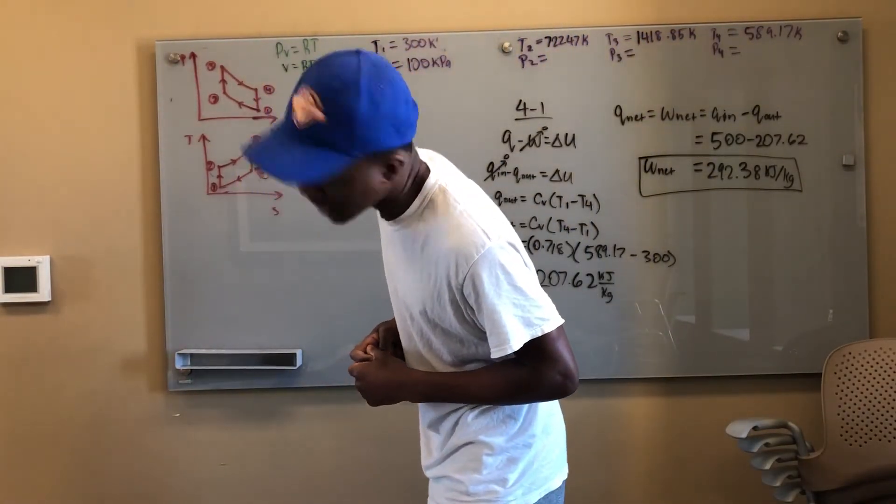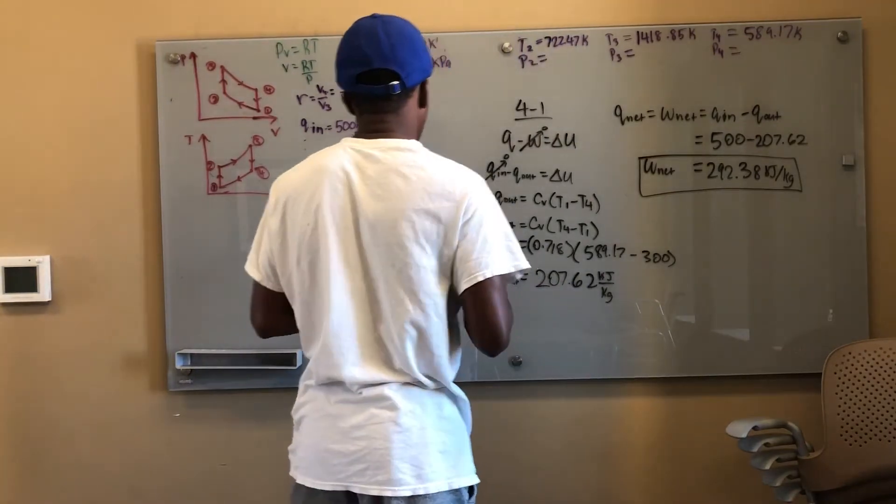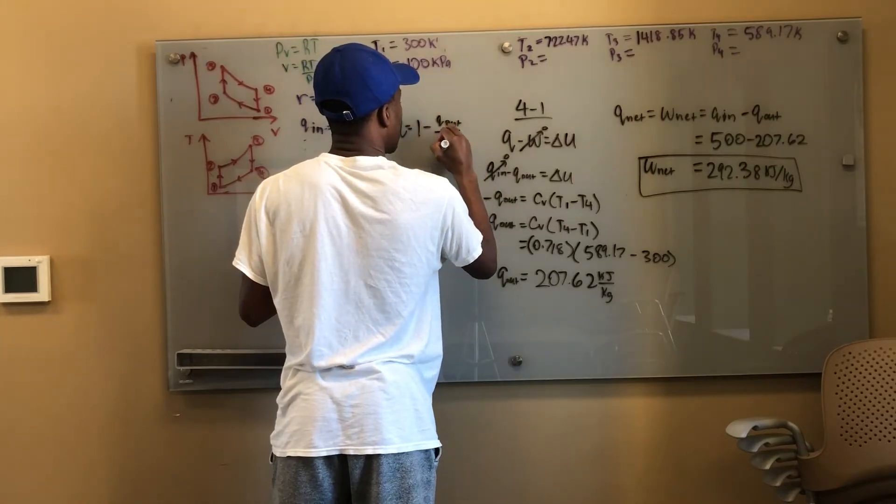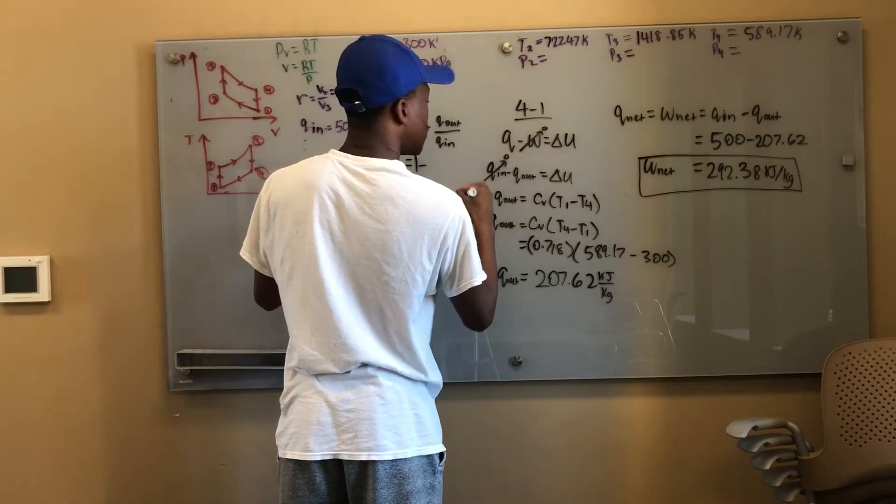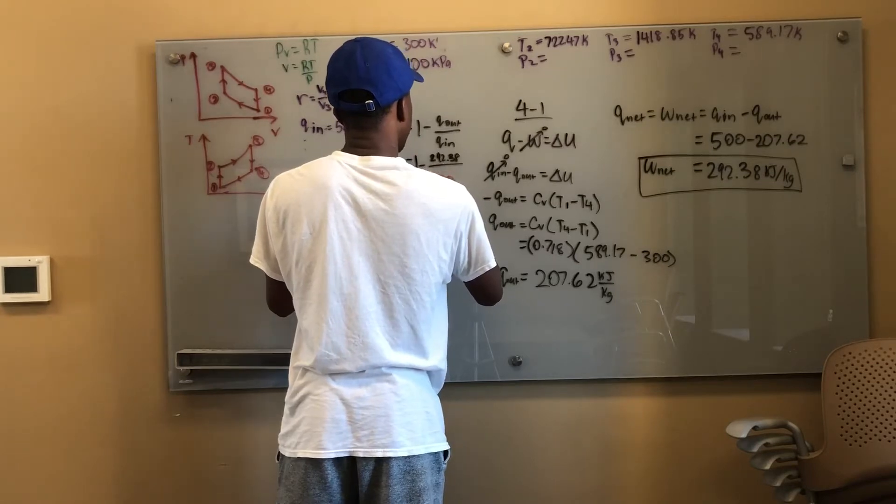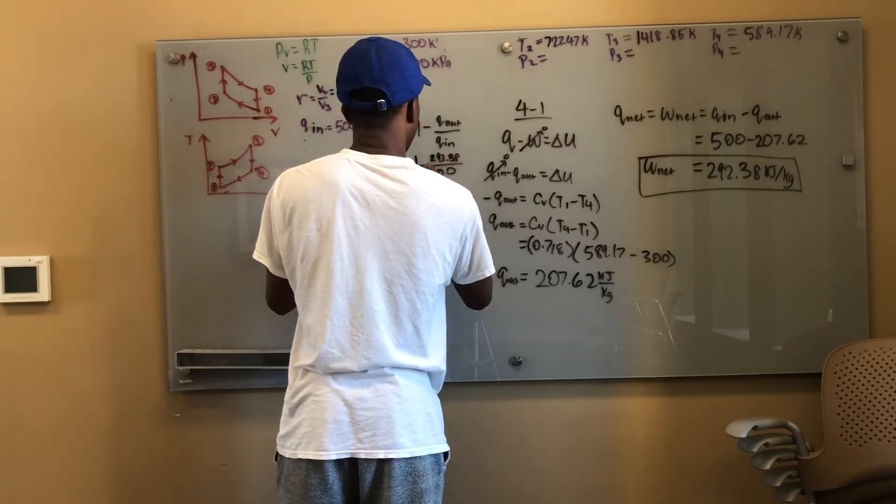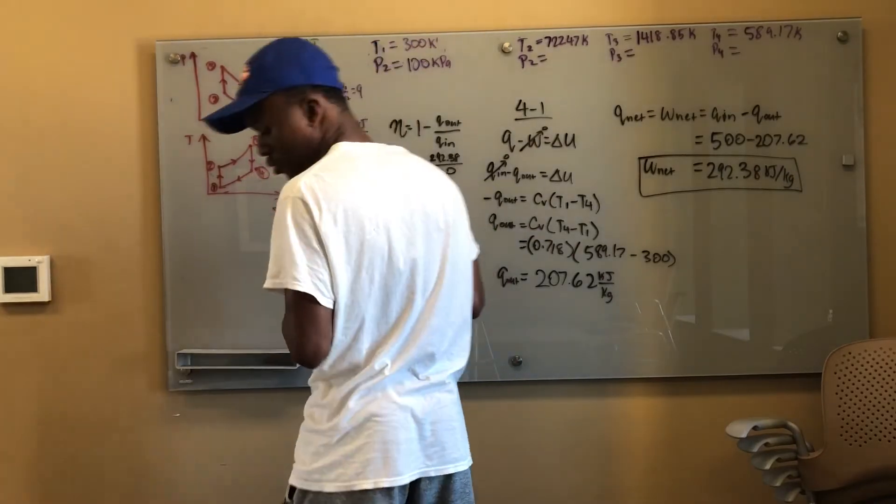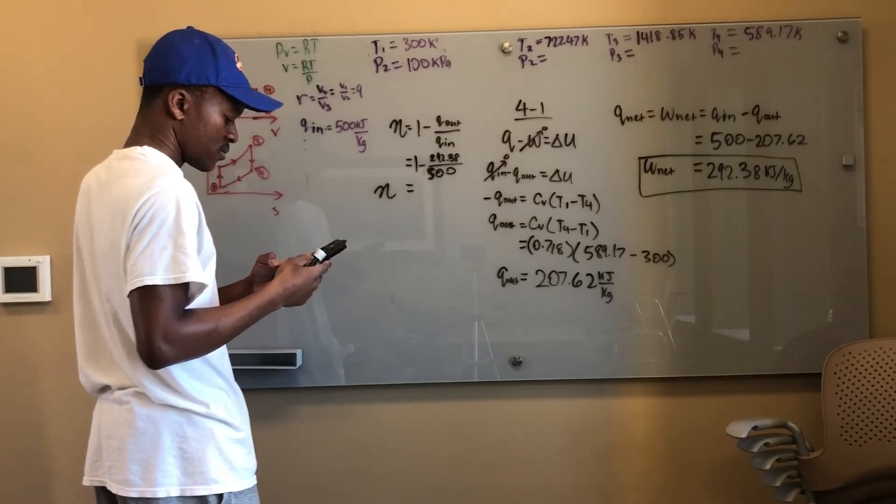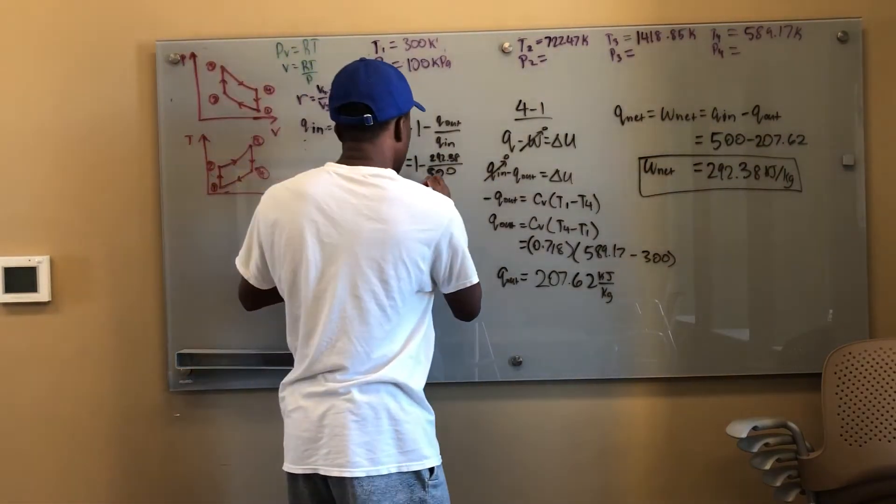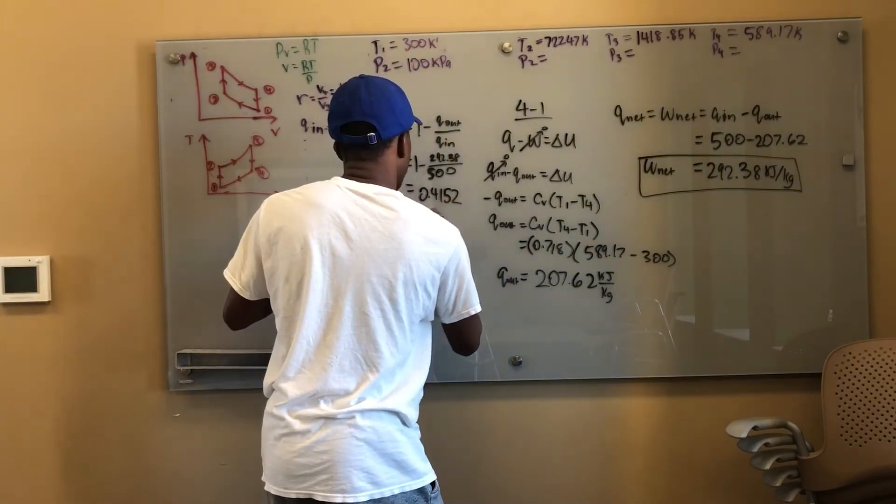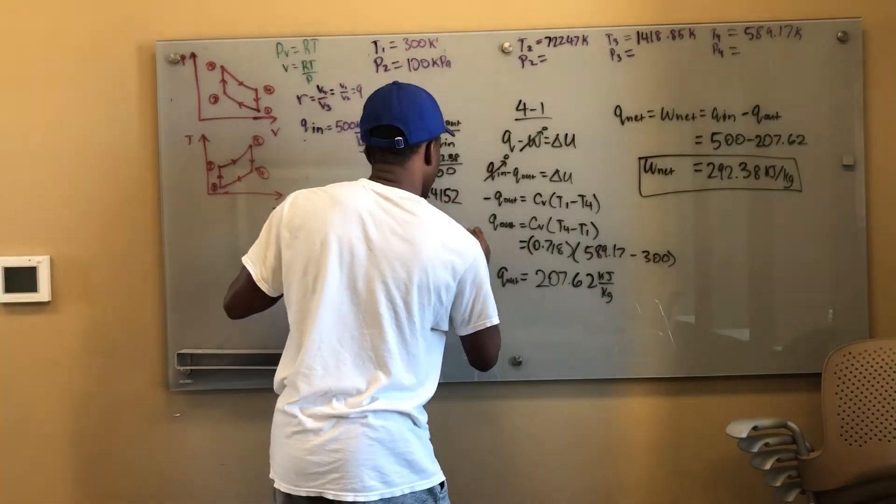Then they said what is the cycle thermal efficiency. That's just one minus Q_out over Q_in. So eta is equal to one minus Q_out over Q_in. That's just one minus Q_out which is 207.38 all over 500. Eta is equal to 0.4152 or I guess 41.52 percent. That's the thermal efficiency.